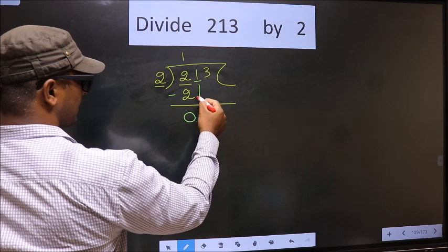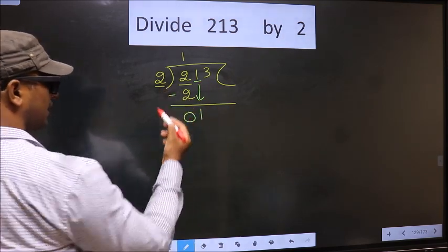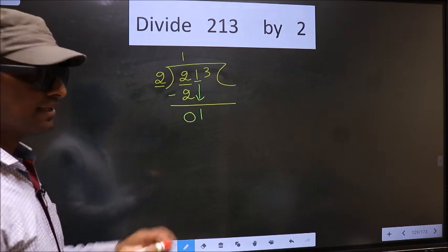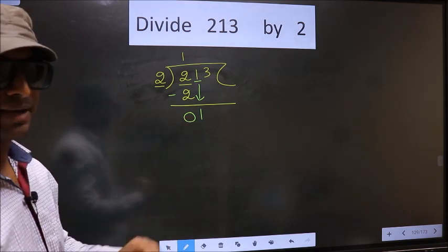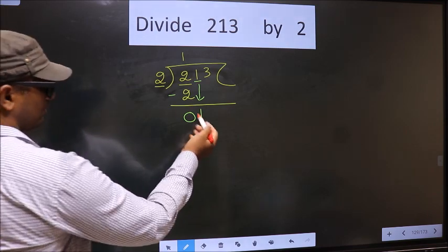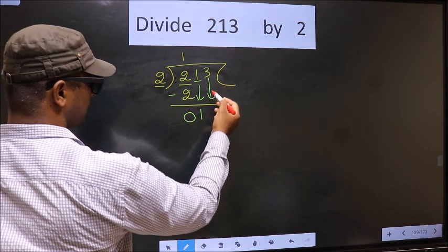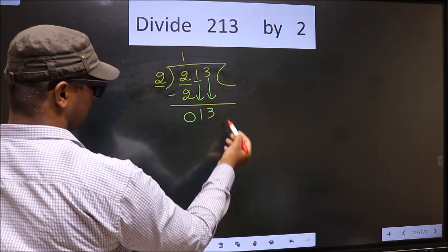Now you bring down the beside number. 1 down. 1 is smaller than 2. And this is where the mistake happens. And the mistake is this: 1 is smaller than 2, so what many do is they directly bring down the other number. 3 down.